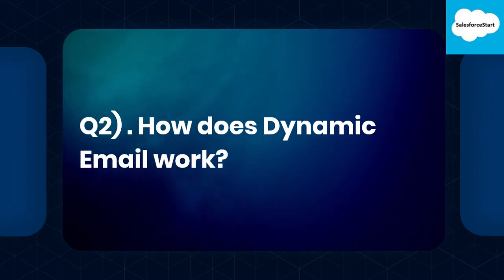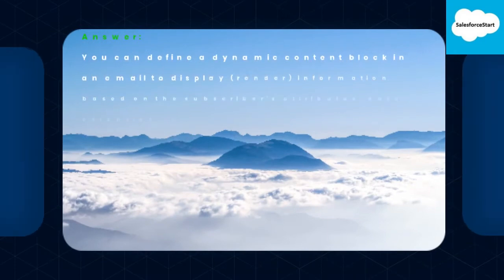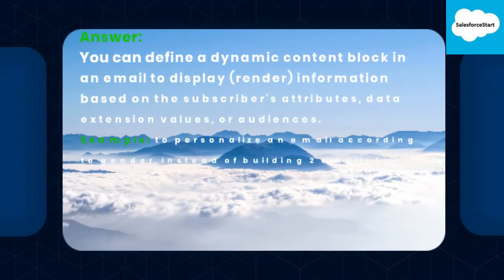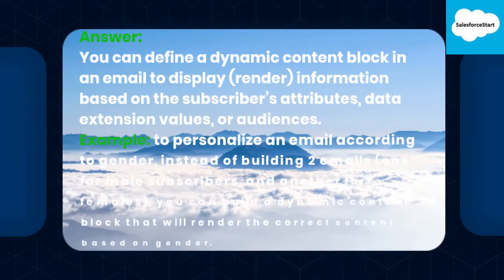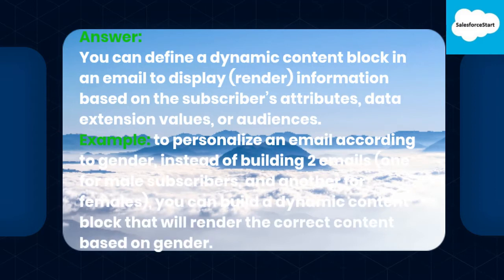Q2: How does dynamic email work? You can define a dynamic content block in an email to display and render information based on the subscriber's attributes, data extension values, or audiences. For example, to personalize an email according to gender, instead of building two emails — one for male subscribers and another for females — you can build a dynamic content block that will render the correct content based on gender.